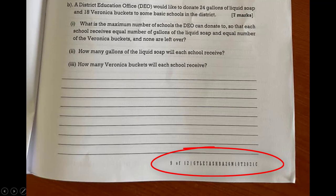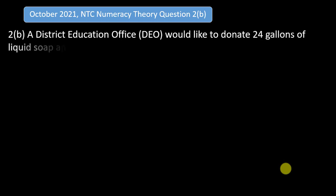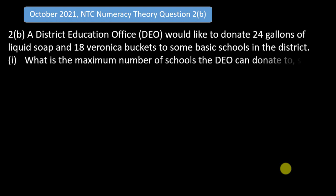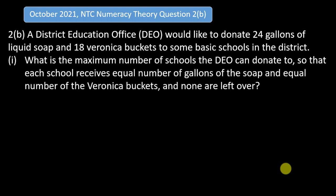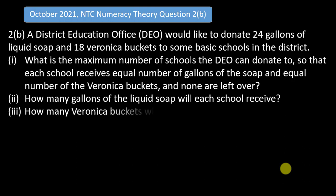A district education office (DEO) would like to donate 24 gallons of liquid soup and 18 Veronica packets to some basic schools in the district. (i) What is the maximum number of schools the DEO can donate to so that each school receives an equal number of gallons of soup and an equal number of Veronica packets, and none are left over? (ii) How many gallons of liquid soup will each school receive? (iii) How many Veronica packets will each school receive?